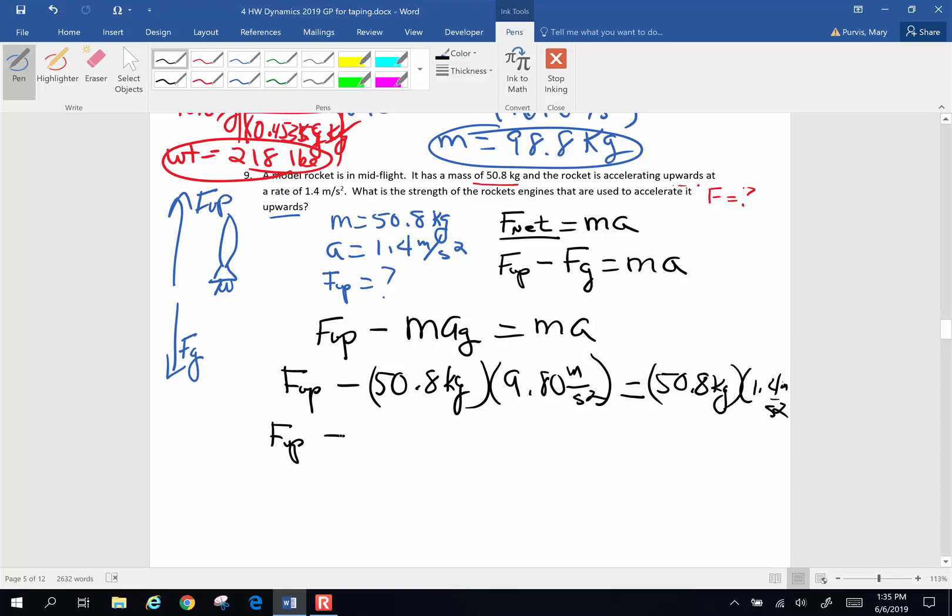So force up minus, all right, calculator time, 50.8 times 9.8. So all of this is 498 kilogram meters per second squared is newtons. The other side, 50.8 times 1.4, so 71.1 newtons. And we've got to get force up alone. How do we get all these newtons together? Well, I'm going to add 498 to both sides. That's how I'm going to get rid of it on this side. These are going to cancel, so force up is going to be 71.1 plus 498. And when I do the math, I end up with 569 newtons. That's going to be the force upward.